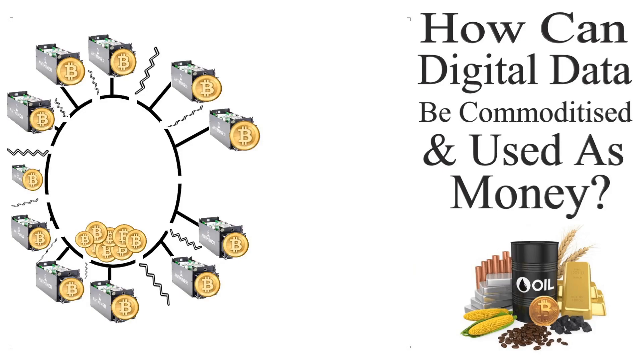Next, the network must have something of economic value within it that can be extracted, that the various operations compete for. In the case of a digital network, this token is called Bitcoin.